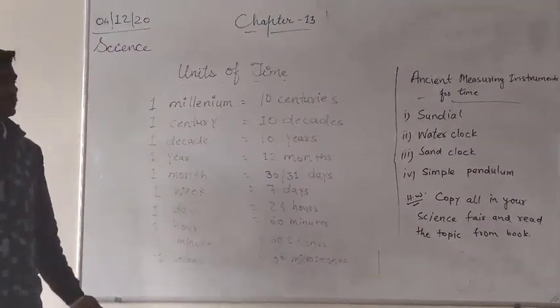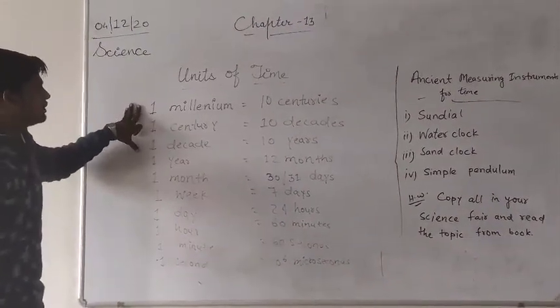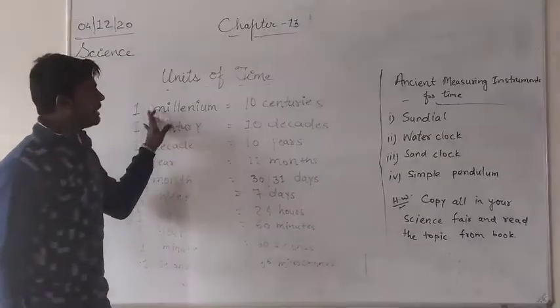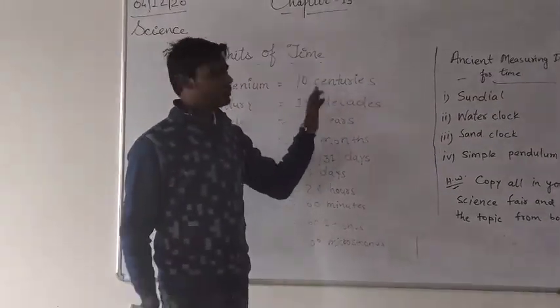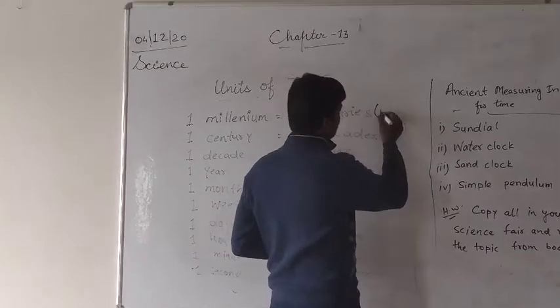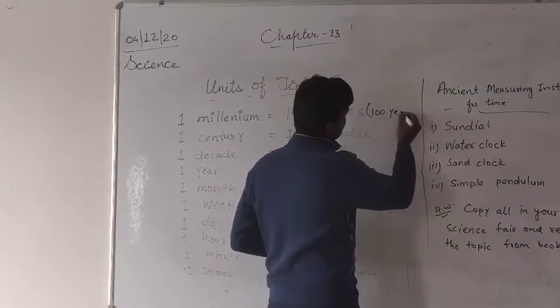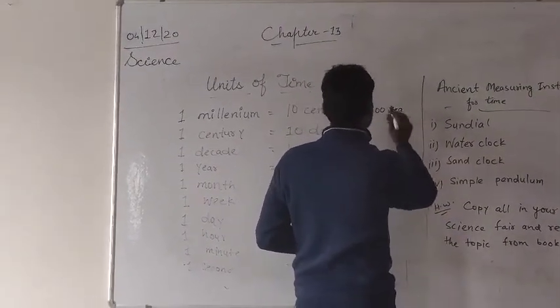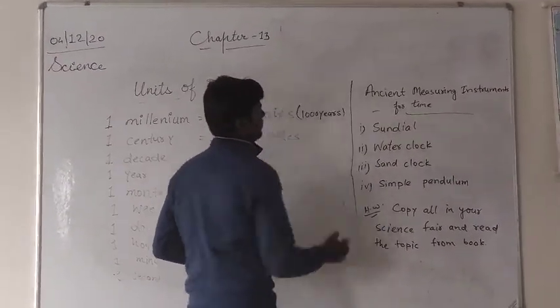Time is a different thing. This is the bigger unit: millennium. One millennium is equal to 10 centuries, you can also write down here 100, 1000 years.